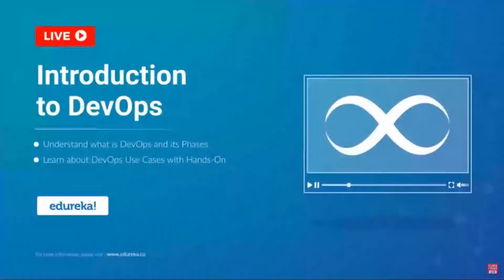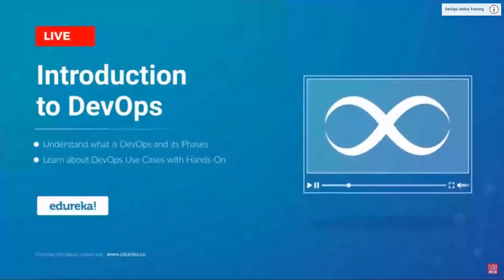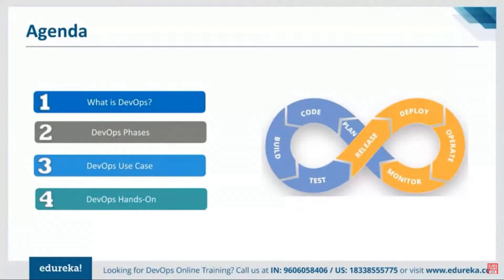We'll begin by understanding what exactly is DevOps and how it works. We'll also look at various DevOps phases and the various tools available in the market. After that, we'll focus on a couple of use cases of DevOps and how it can be implemented in real life. Finally, in the hands-on part, I'll show you how to prepare a build pipeline using Jenkins.